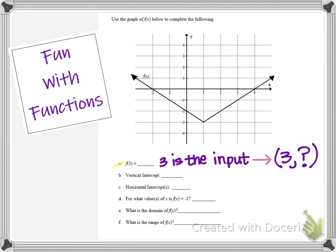We know the x value is 3, but we're looking for the y value. On my graph, I'm going to go to 3 on the x axis, and then I'm going to go down and meet the graph. I see that the ordered pair (3, -1) is on the graph. So that means when my input value is 3, my output value is negative 1. So for part a, we say f of 3 equals negative 1.